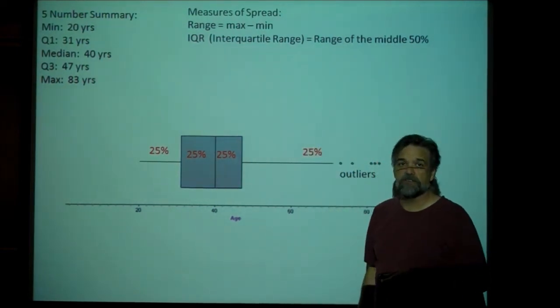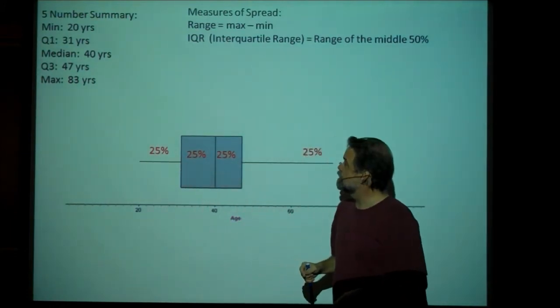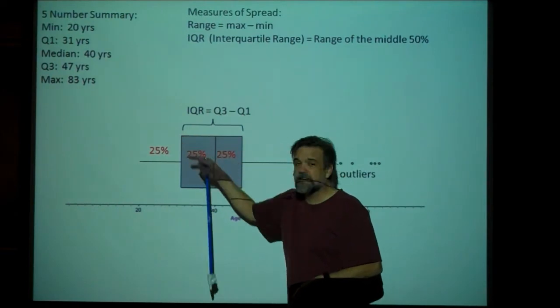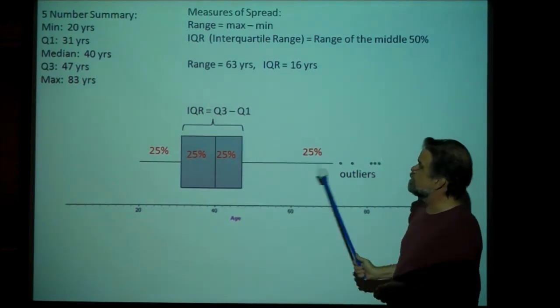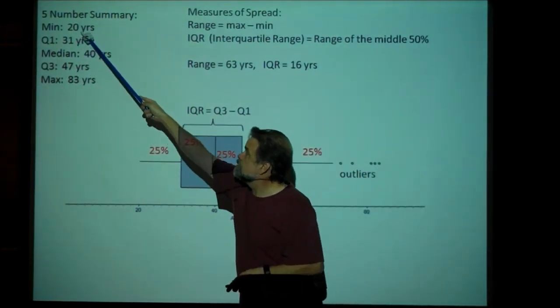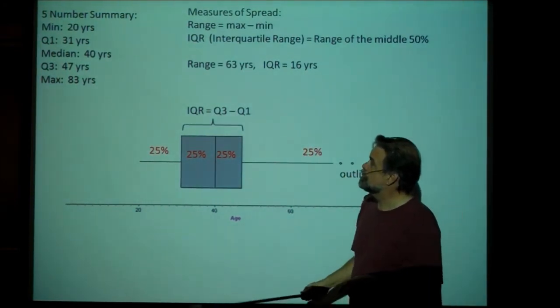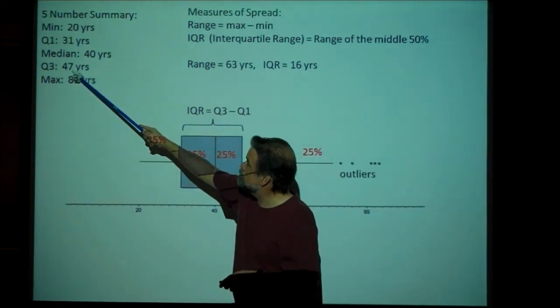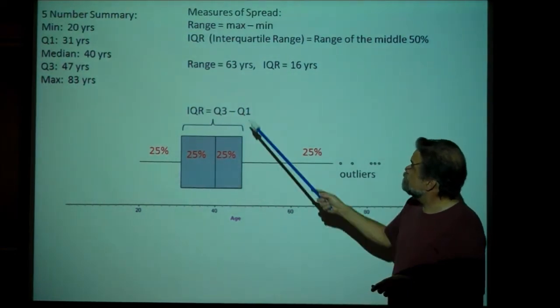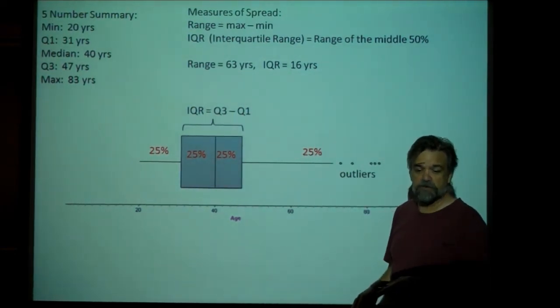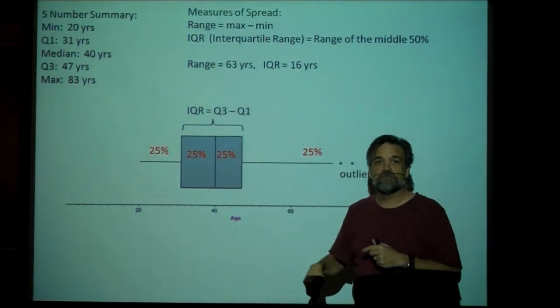Another way is to look at the IQR, or interquartile range. And what the interquartile range is, it's the range of the middle 50% of your data. It's Q3 minus Q1. So in this particular case, our range is 63 years, because we're taking our maximum, 83, minus our minimum, 20. And our IQR is 16 years, because we're taking our Q3, which is 47, and subtracting Q1, 31. So those are two really good ways of measuring the spread.